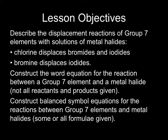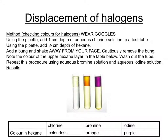Next we have to learn about the displacement reactions of group 7, which tell us a little more about the reactivity of one halogen compared with another. You also have to know the word equations and balanced symbol equations for the reactions that take place. A method you might have used is to add solutions of one halogen — for example chlorine — to solutions of a halide, for example sodium bromide or potassium iodide.